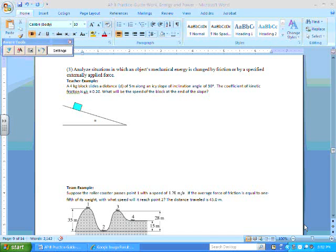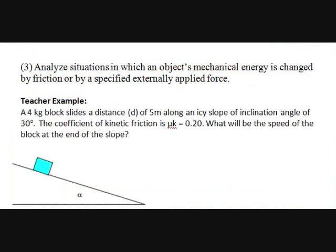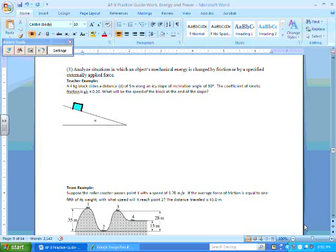So let's look at this problem. You've got a 4-kilogram block sliding a distance 5 meters along an icy slope at an angle 30 degrees. Coefficient of friction kinetic is 0.2. How fast will the block be moving when it reaches the end of the slope?